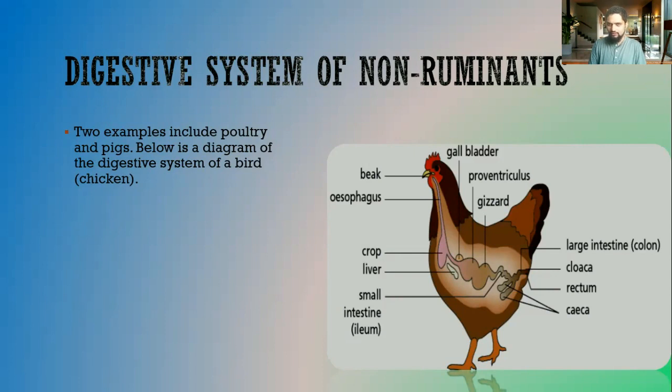So we're going to quickly go through the different structures. You need to be able to identify these structures. So we have the beak, the esophagus, the crop, the proventriculus, the gizzard, the small intestine, the liver, the gallbladder, the large intestine, cloaca, the rectum and the ceca.